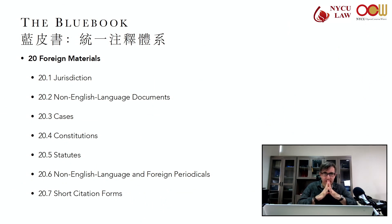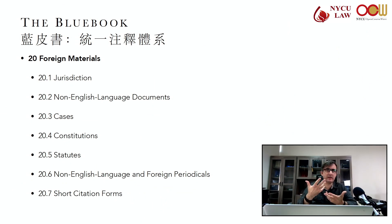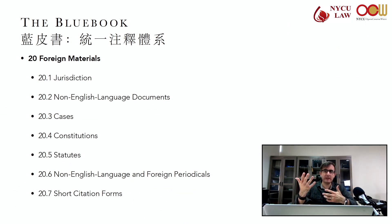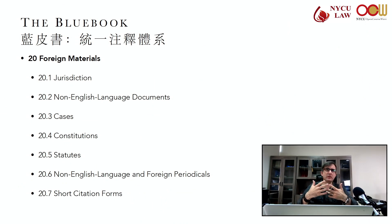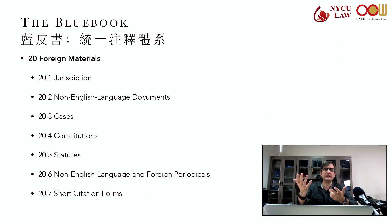When you're citing to translations of non-English language documents, the citation would ideally be to the original document. But for those of us who may not speak a certain language, you may cite to the translation as well. This would be in what's called a parallel citation — you would cite the source first, followed by a comma, then "translated in" in italics, and then list where it's translated.